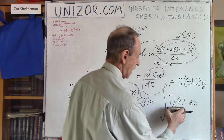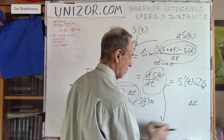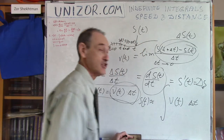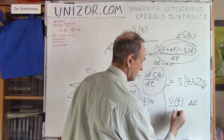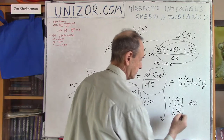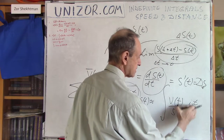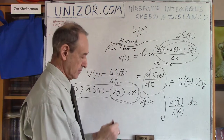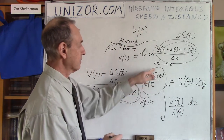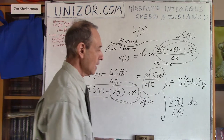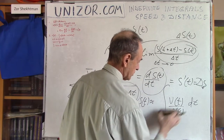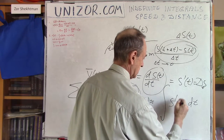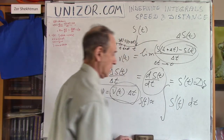As delta t goes to zero, the average speed becomes the instantaneous speed, which is actually the derivative. And instead of delta they used d to indicate that this is infinitesimal — very similar to whatever we did with the derivative notation. So replacing delta with d, we arrive at the integral notation.